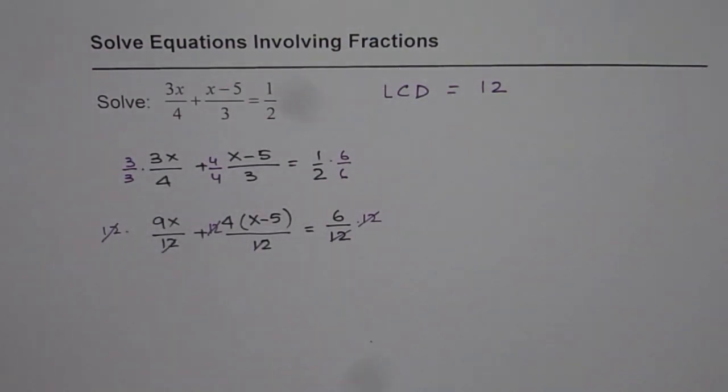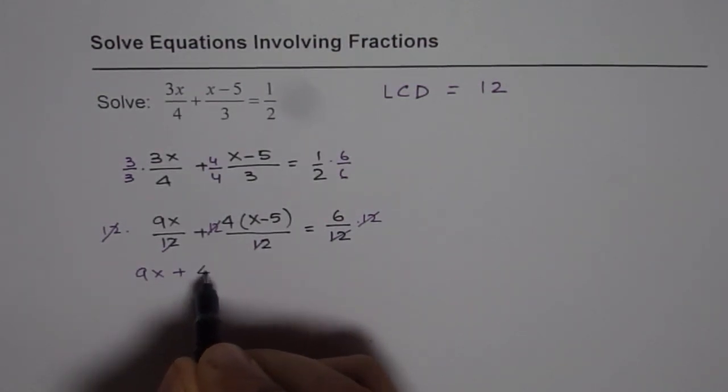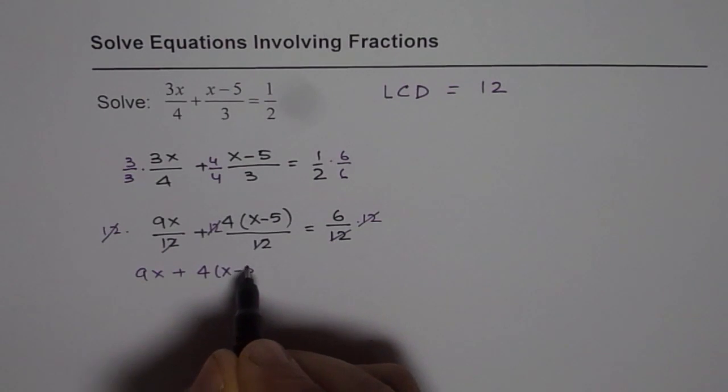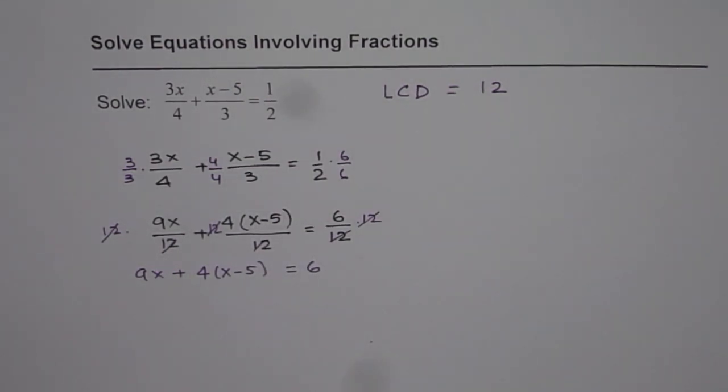So effectively we are left with the equation which could be written as 9x plus 4 times x minus 5 equals to 6. Now this equation does not have any fraction part. It is like a linear equation which you could solve. That is how you should be solving these equations with fractions.